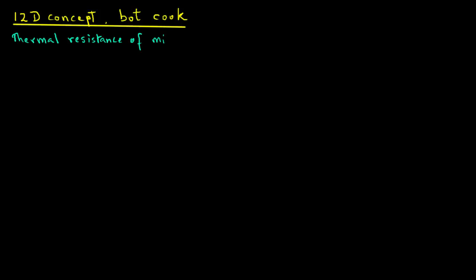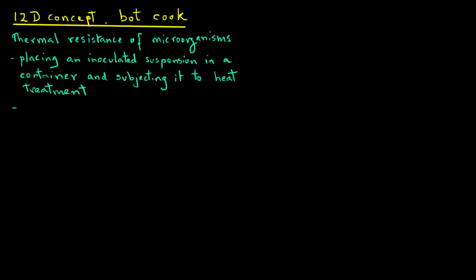One way of understanding this 12-D concept is to first see how we determine thermal resistance of microorganisms. It is done by placing an inoculated suspension of a certain microorganism in a container, usually a very small container such as a capillary tube, and then subjecting it to a heat treatment. The container has to be very small so that we get instantaneous heating and cooling. The time of heating for the complete destruction of the microorganism is then used to determine the thermal resistance of that microorganism.